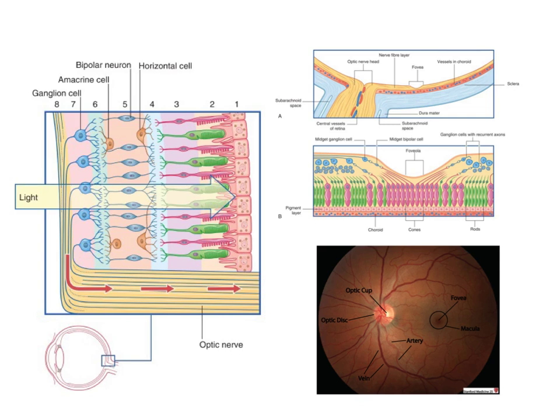If we draw an analogy with the somatosensory system — a relatively loose analogy — the bipolar neurons we can think of as the first-order sensory neurons, and the ganglion cells are the second-order sensory neurons. Therefore, the third-order neurons in this system would be the neurons sitting in the lateral geniculate nucleus, which is indeed a part of the thalamus. So maybe the analogy isn't that bad after all.